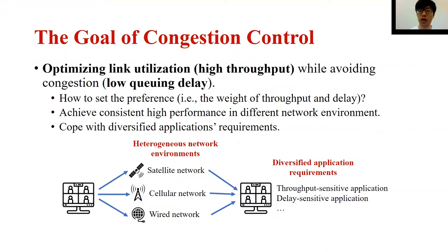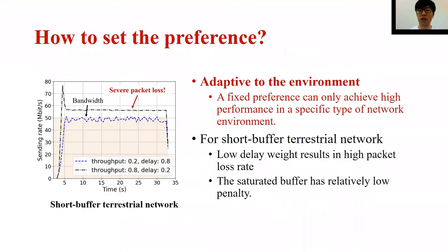Congestion control has two competing objectives: high throughput and low queue delay. But how should we set the preference of these two objectives — in other words, how to set the weight of throughput and delay? The preference should be adaptively adjusted in different network environments, since a fixed preference can only achieve high performance in a specific type of network environment. We use an experiment to illustrate this phenomenon.